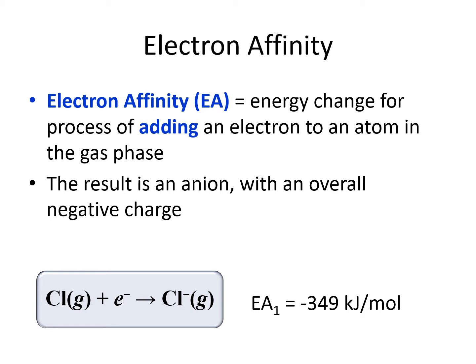For example, the neutral chlorine atom can gain an electron to make the chloride ion, which has a minus one charge. The electron affinity is negative 349 kilojoules per mole. The negative sign means that rather than costing energy to make this happen, energy is released by this reaction.